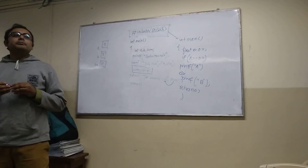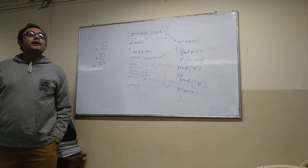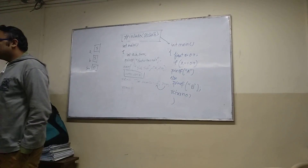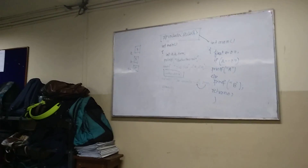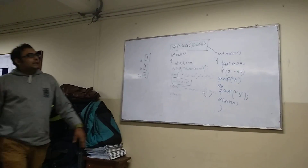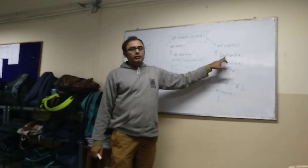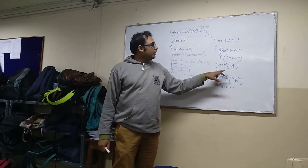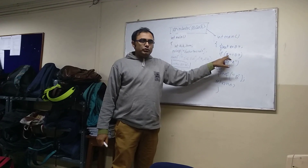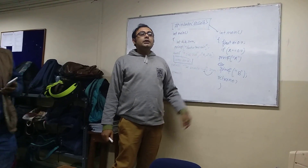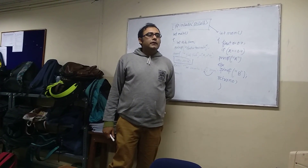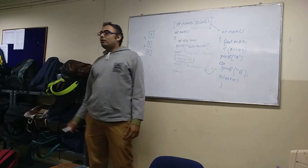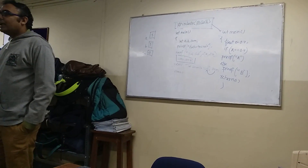What is the output of this program? This is a simple program where in main, float x equals 0.7. You are checking if x equals 0.7. If it is true, then it will print A; otherwise, it will print B. Your answer is it will print A.